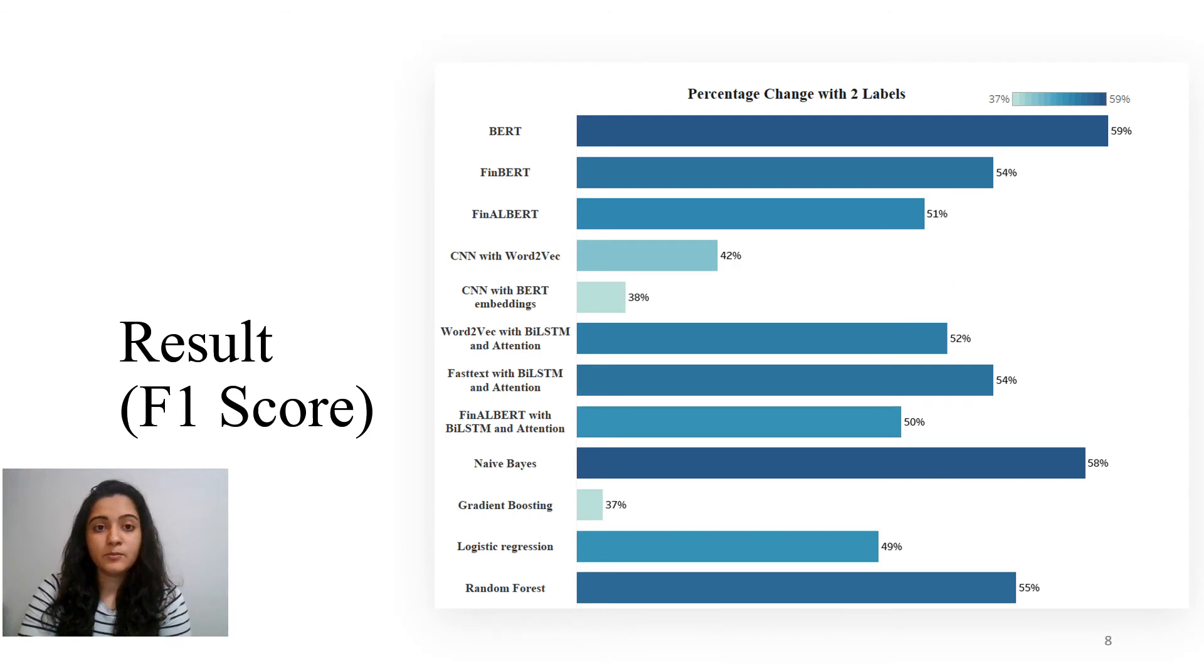Now, let's look at the model results. After labeling this StockTwits data, we train different models. As mentioned earlier, in this presentation, we are focusing on the results of one-year FANG data. We would be looking at the F1 score for all models as it considers how the data is distributed and works well for imbalanced classes. The accuracy of all models is shown in the appendix.